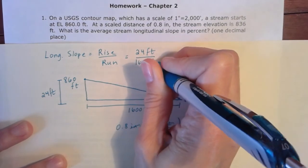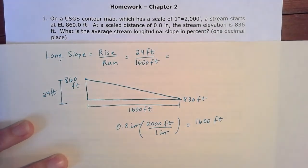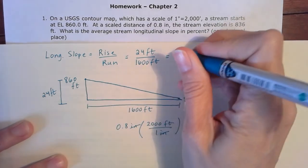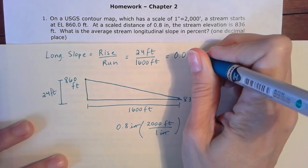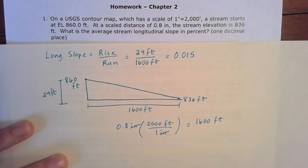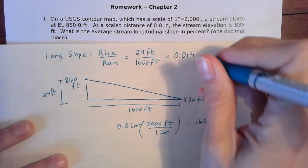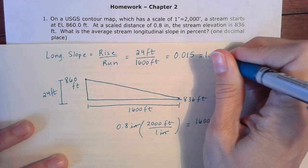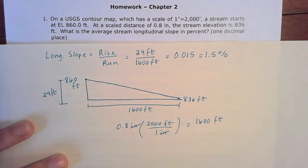And we can plug it into the equation here and get our decimal out, which is 0.015. Express it as a percent round to one decimal place. We get 1.5% for the average stream longitudinal slope for that problem.